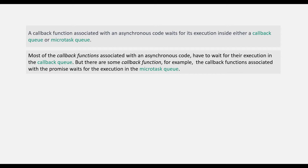For most cases, callback functions associated with asynchronous JavaScript code are passed to the callback queue where they wait for execution. But some callback functions — for example, those associated with a promise — wait inside the microtask queue for their execution. The callback functions associated with a promise are not handed over to the callback queue; they are passed to the microtask queue.